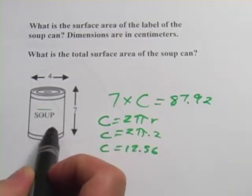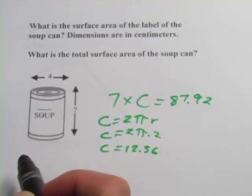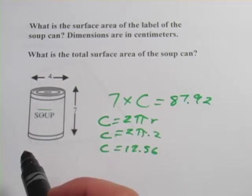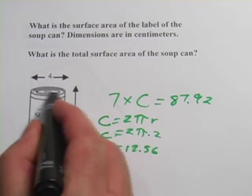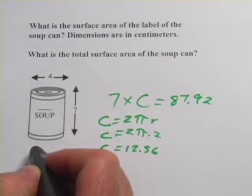So that's the surface area for the label part of the can, or the part of the can that the label would cover up. But there's more to the surface area of a can than that. There's the top, and there's the bottom.